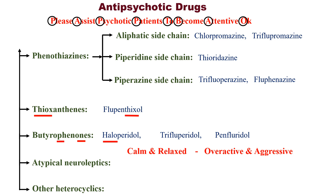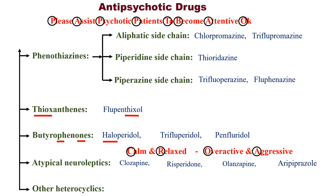The next category is Atypical neuroleptics. 'Atypical' means unusual or not normal. Think of a psychotic patient who is sometimes calm and relaxed, and sometimes overactive and aggressive — that behavior is atypical. The drugs are: C for clozapine, R for risperidone, O for olanzapine, and A for aripiprazole.